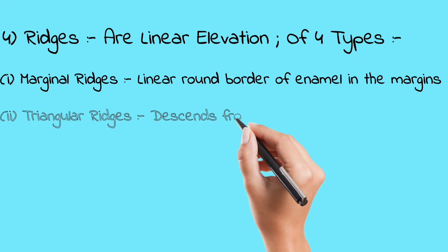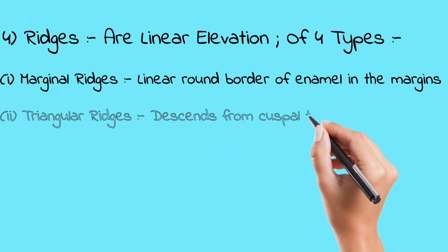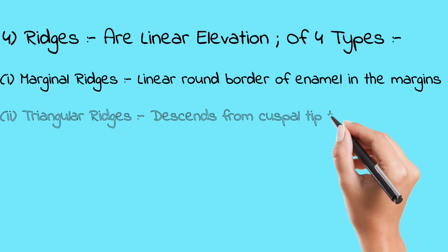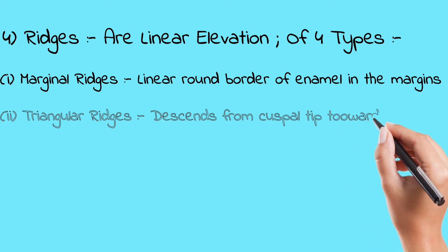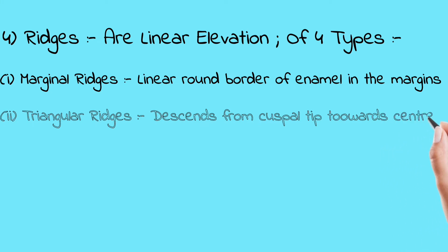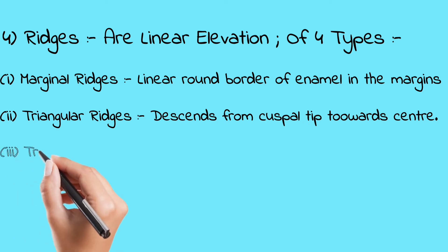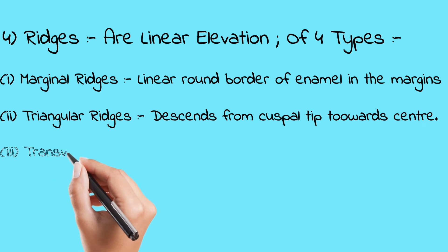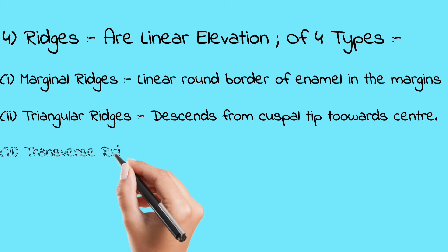Transverse ridges are formed by the union of two triangular ridges in the transverse direction. To understand the transverse ridge, one must first understand the triangular ridges.